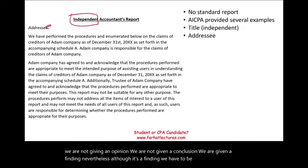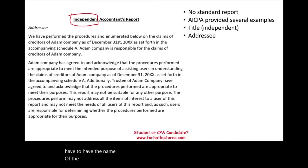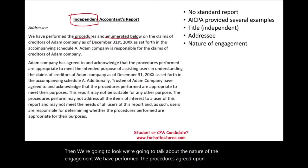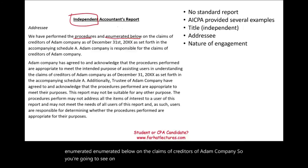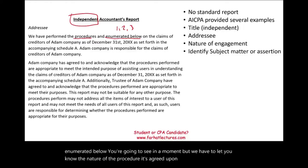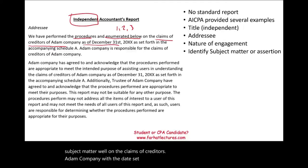We have to have the name of the addressee — who are we addressing? Then we talk about the nature of the engagement: we have performed the agreed-upon procedures enumerated below on the claims of creditors of Adam Company. We have to identify the subject matter: on the claims of creditors of Adam Company with the date set forth in the accompanying Schedule A. This is the subject matter for our agreed-upon procedures.